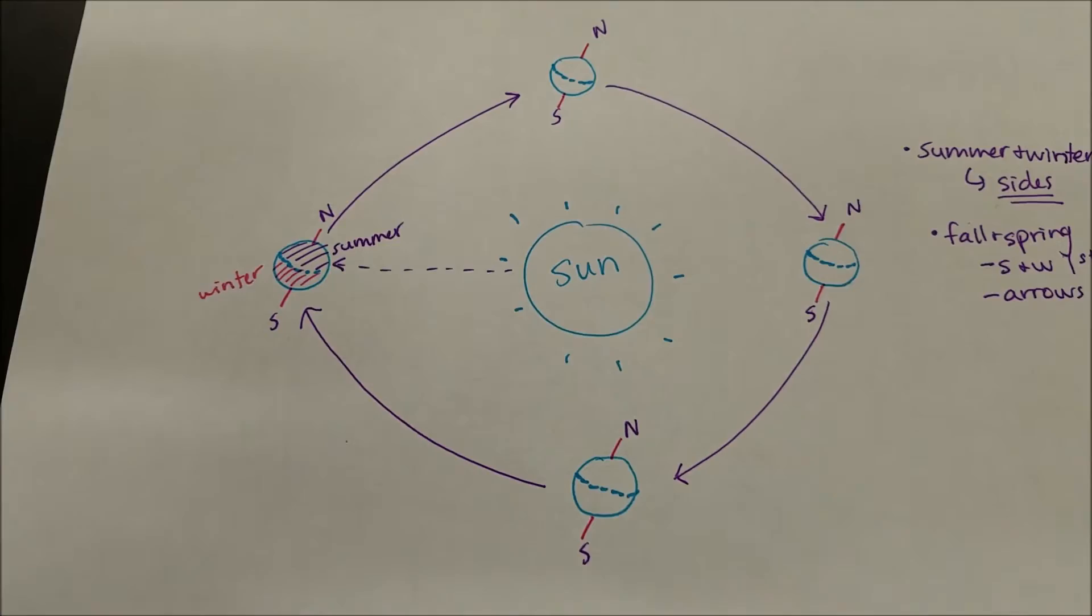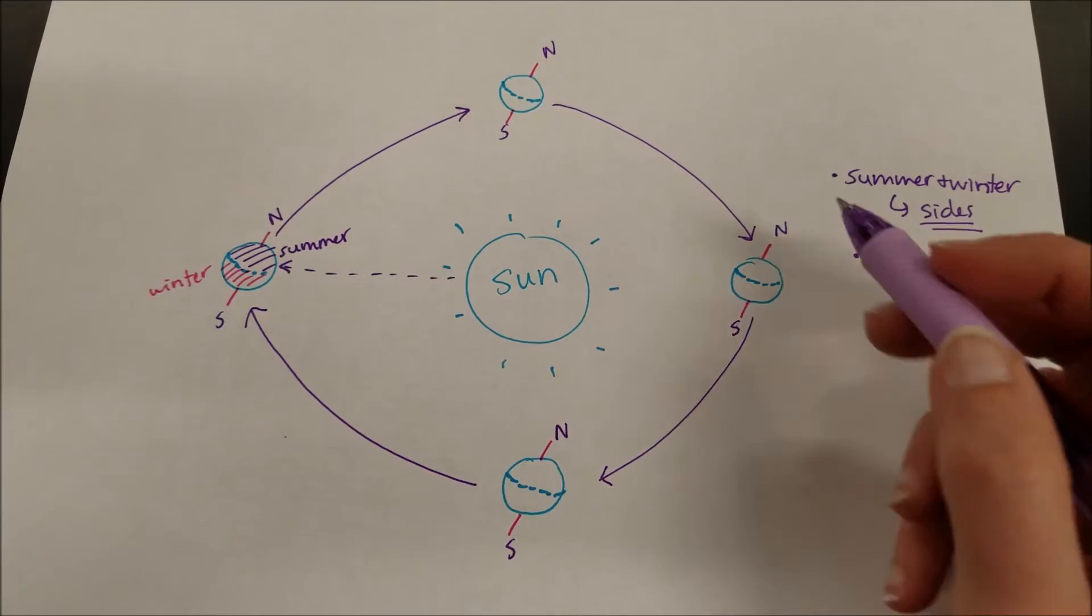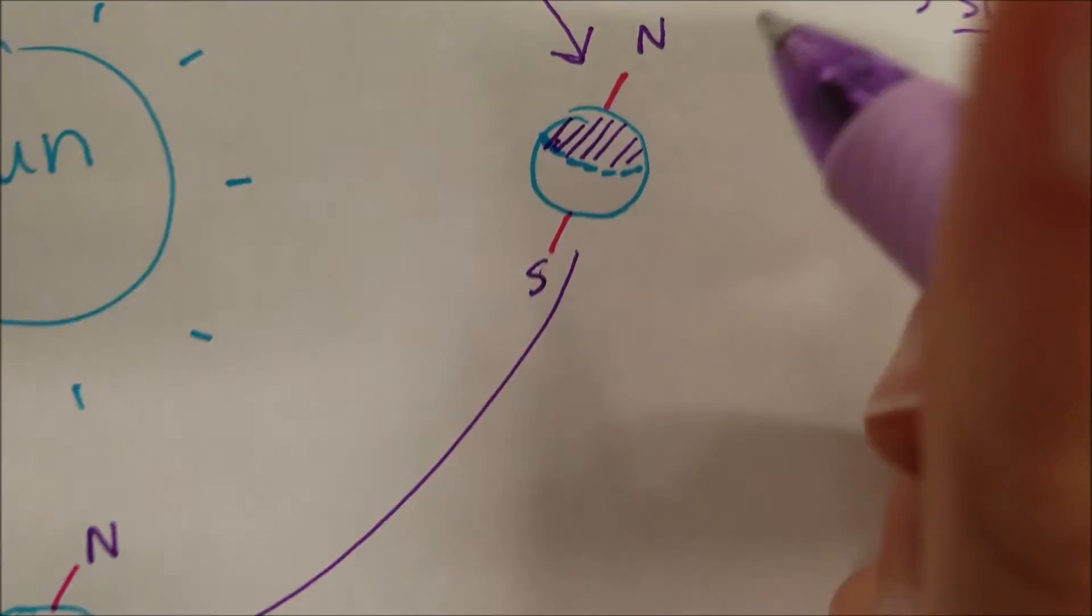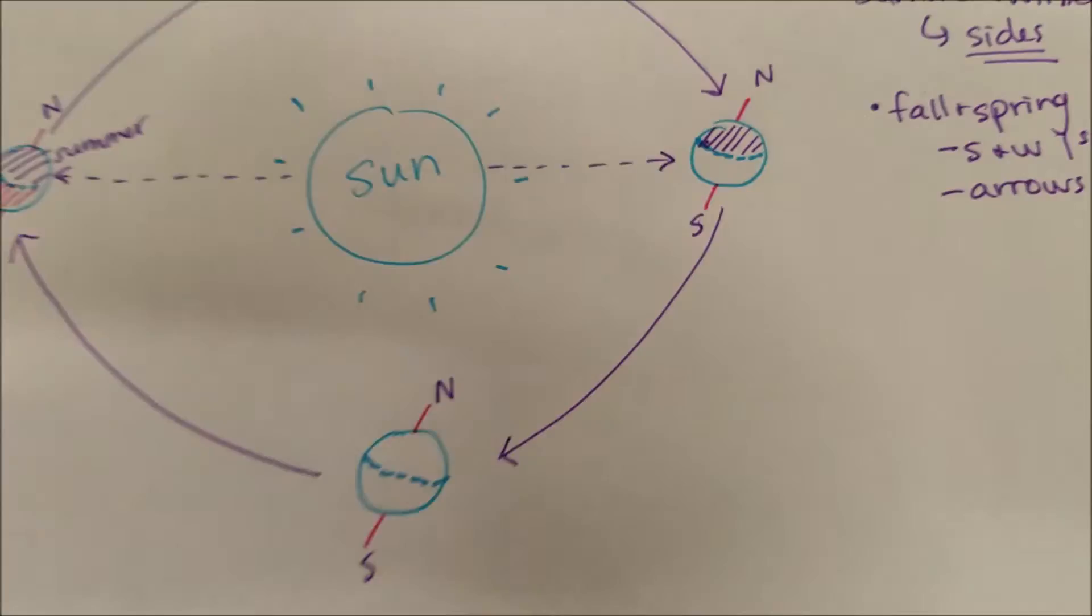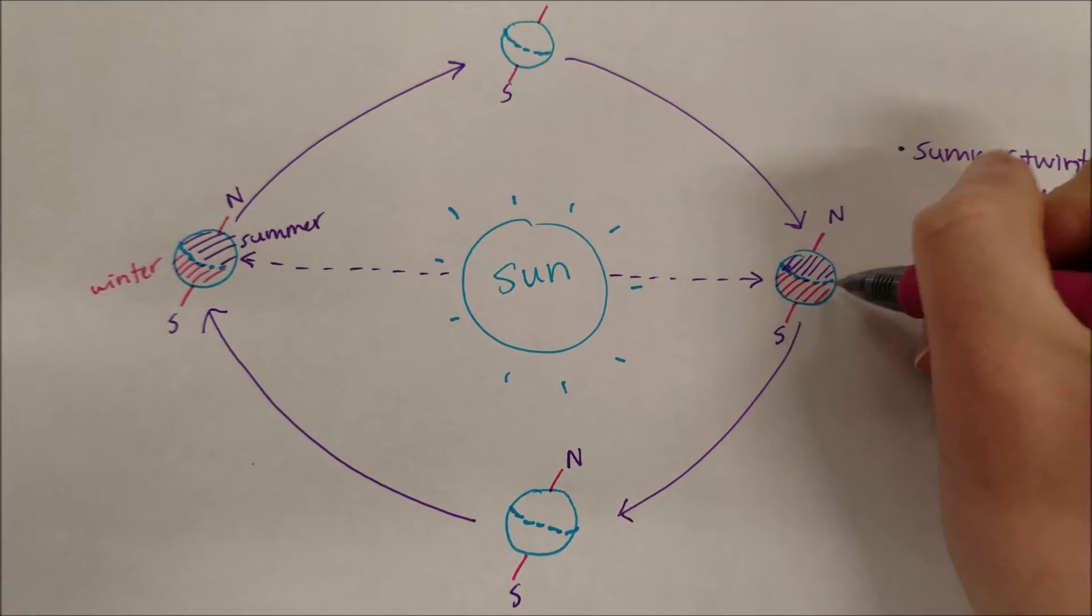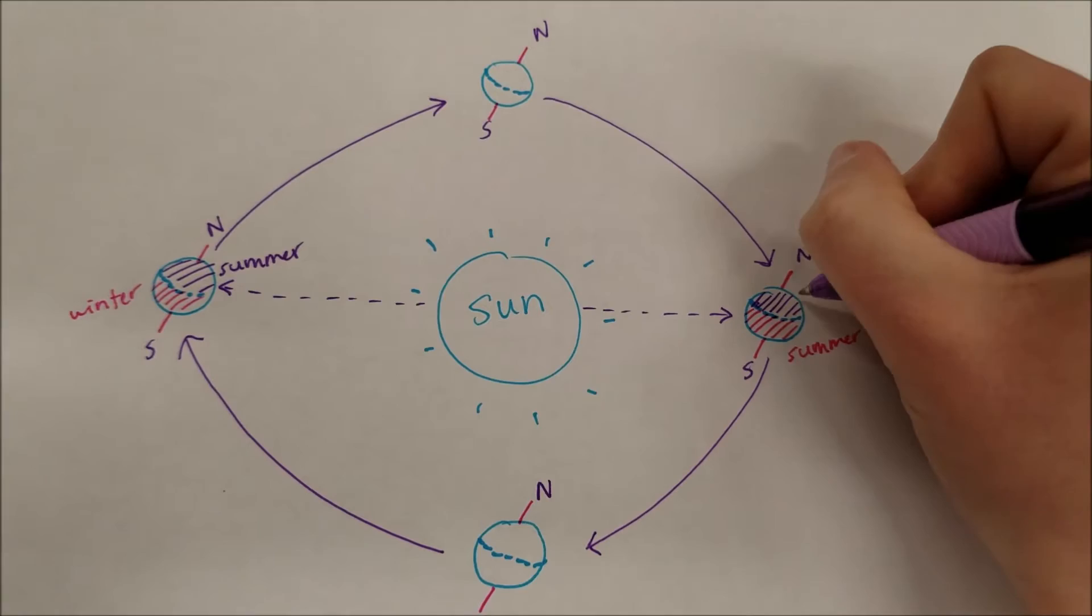I'm going to go around and label the northern hemisphere. On this section of the diagram, if we draw an arrow directly from the sun to the Earth, the most direct sunlight points at the southern hemisphere. This means the southern hemisphere would be in summer with the hottest days, and the northern hemisphere would be in winter.